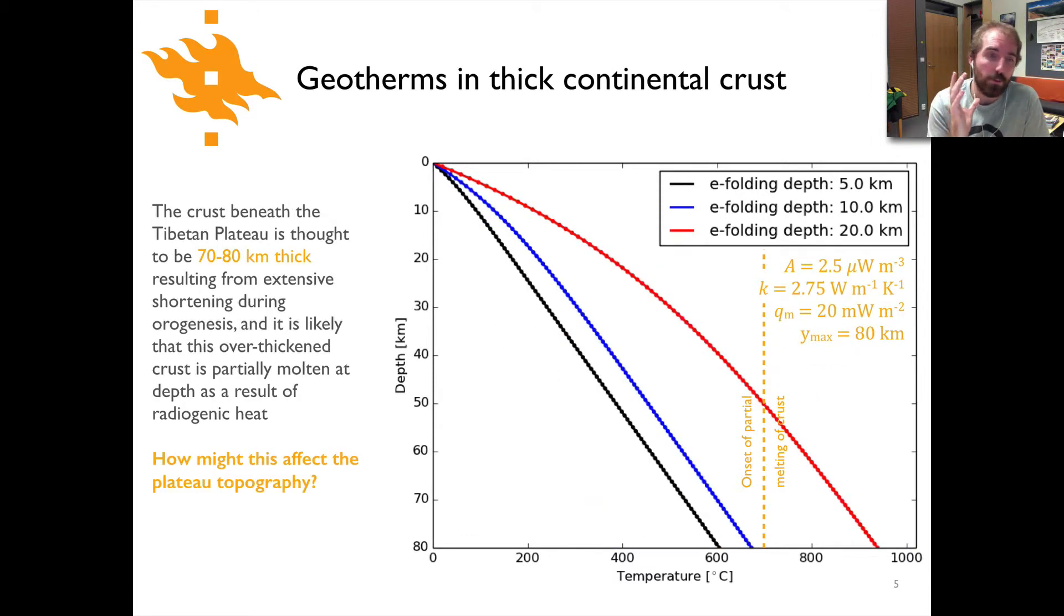Now if we look at an example of something like a thickened plateau, a place where the crust is anomalously thick like in Tibet, here we have a prediction for an 80 kilometer thick crust. This is something that would have formed by overthickening and shortening of the crust, increasing its thickness significantly.